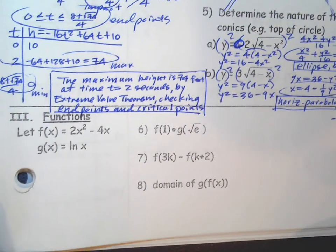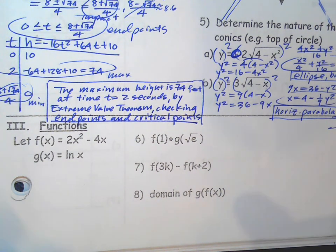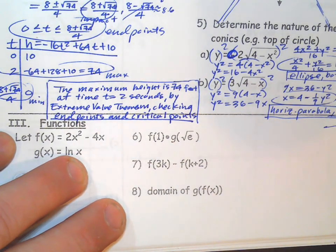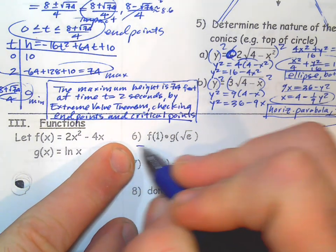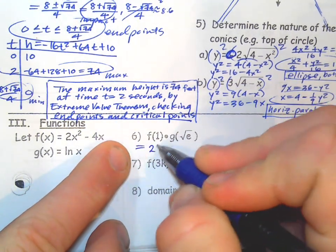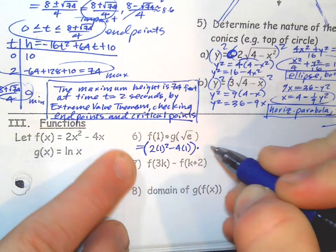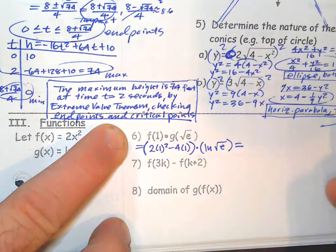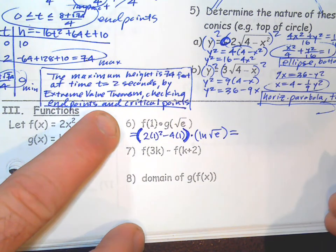Function notation problems should be more direct, but it's easy to make little mistakes, and you have to simplify your answers. Make sure you plug into the right function. If I plug 1 into f, wherever I see an x I put parentheses. Then g of (something) is natural log of the square root of e. That's going to be 2 − 4 = −2. Natural log of √e is the same as natural log of e^(1/2), which is 1/2. So the final answer is −1 + 1/2... actually it simplifies to −2 + 1/2 = −3/2. The natural log and e cancel, giving 1/2; don't leave natural logs with e's inside.